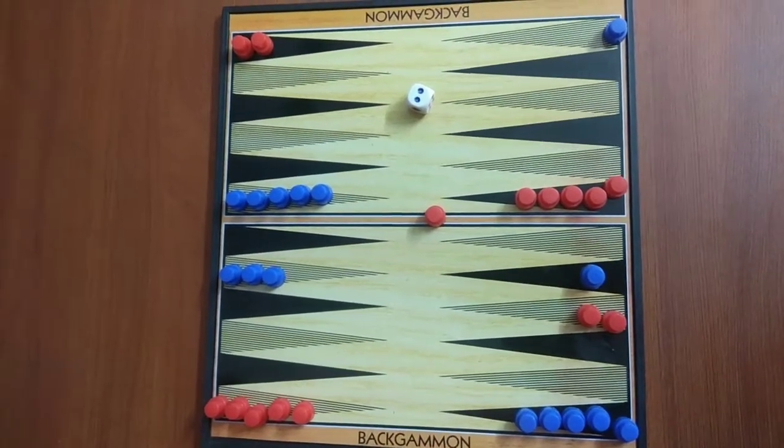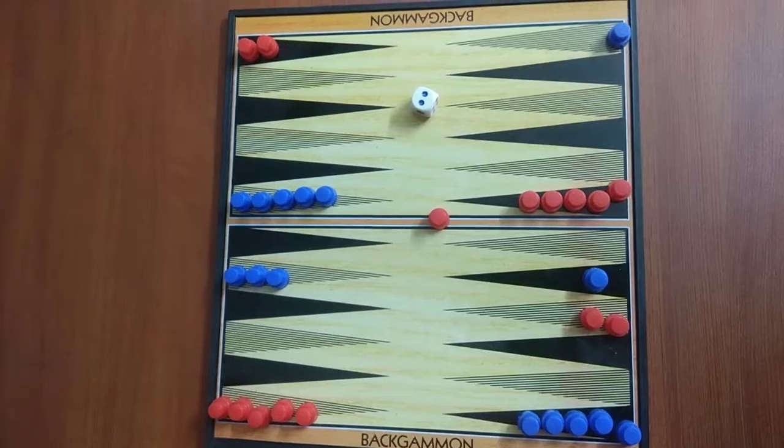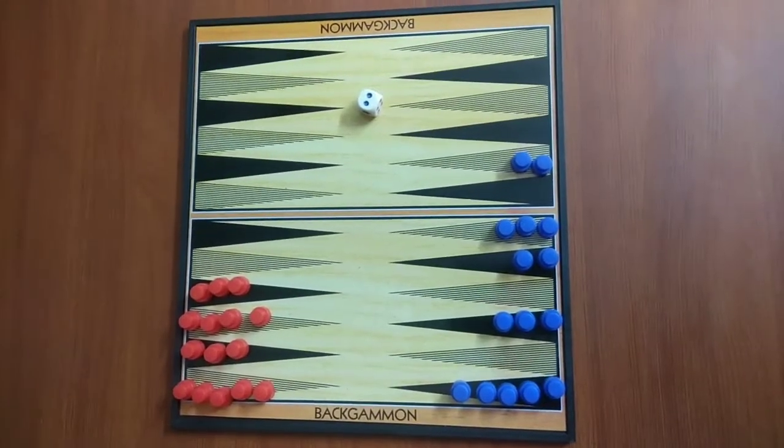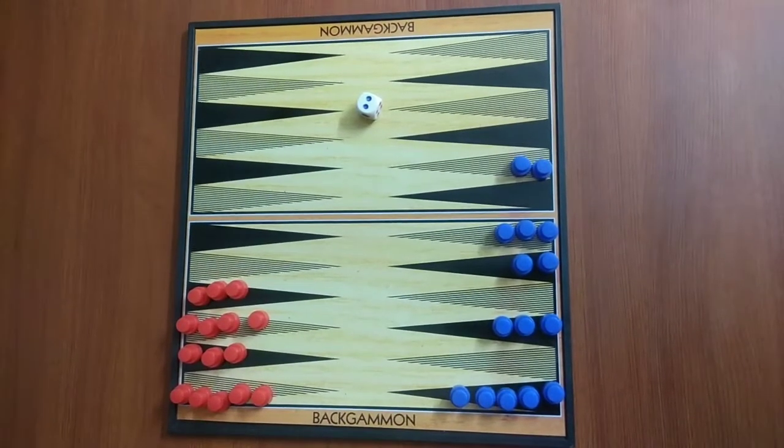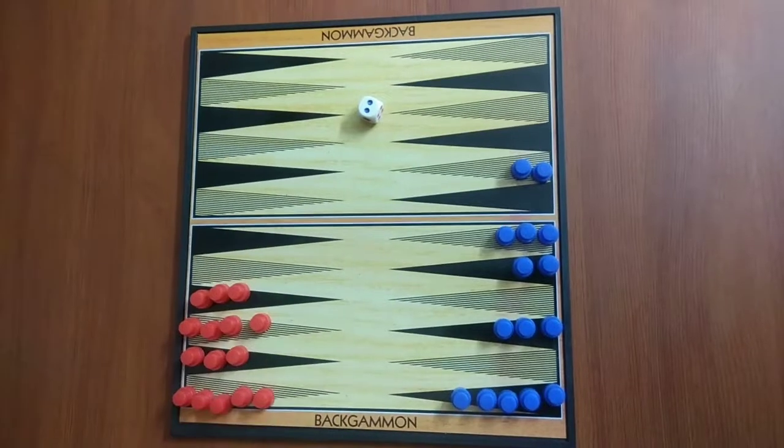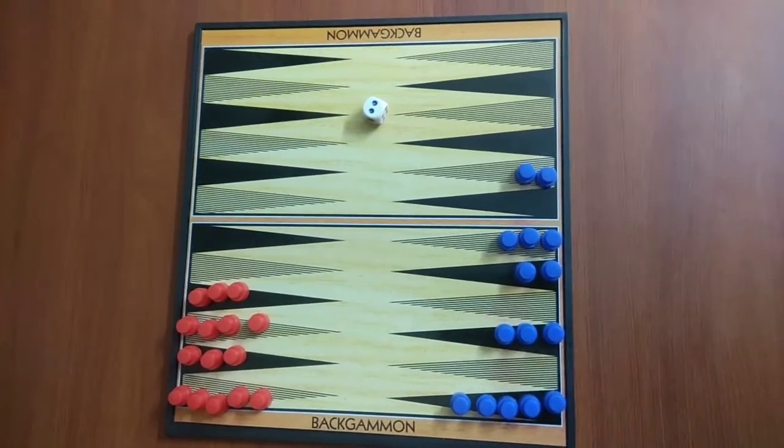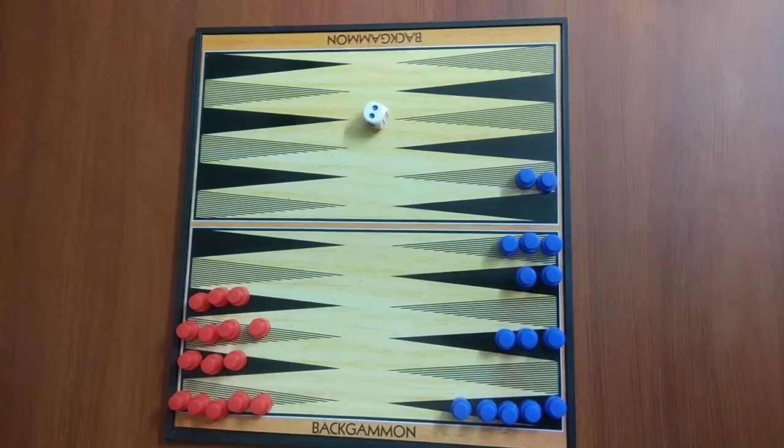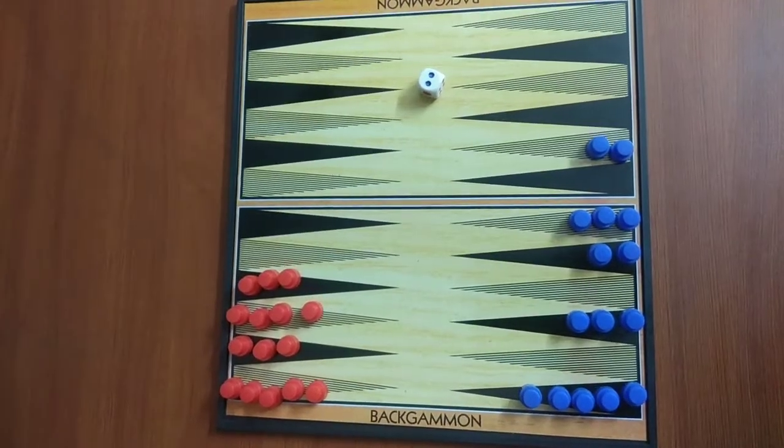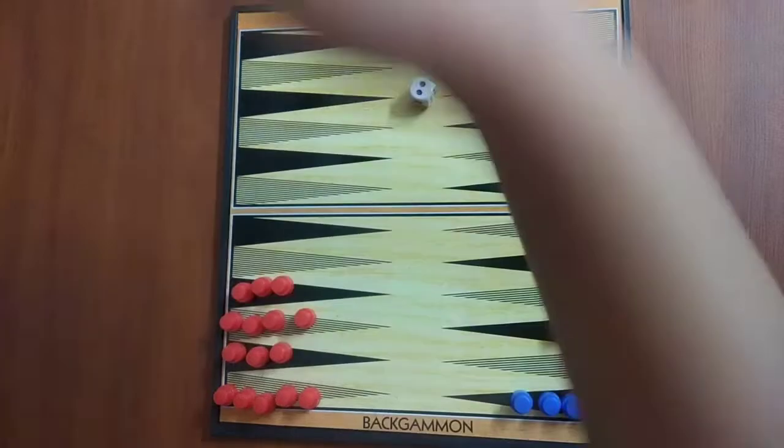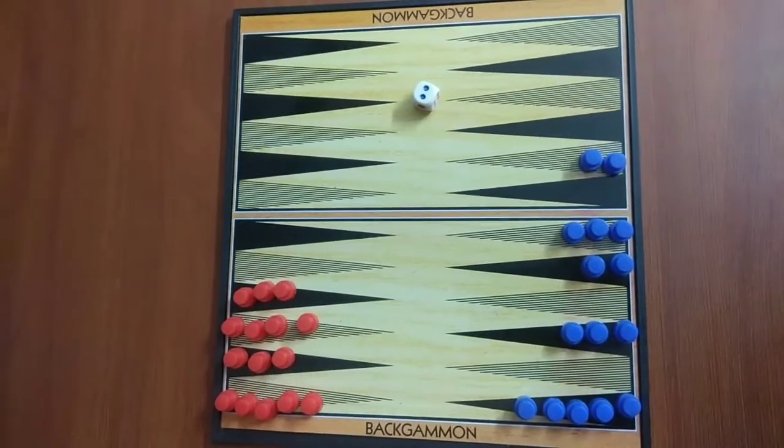And start it over from the beginning point. Once all the pieces are in this side of the board closest to end, player can start to remove the pieces from the board. A player wins once all his pieces are removed from the board.